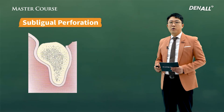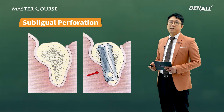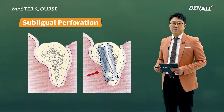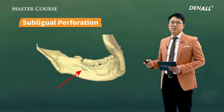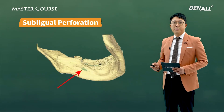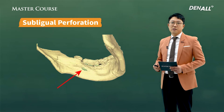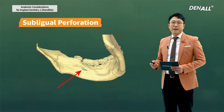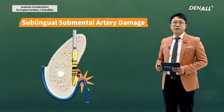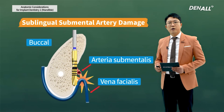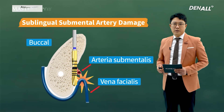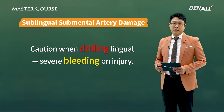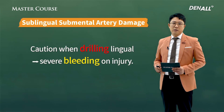If the submandibular fossa is severe and you place a long implant, a lingual perforation can occur. In this case, we need to avoid the perforation by using short implants. When you make a perforation, drilling can damage blood vessels running below, which can result in severe bleeding. So you need to be careful.